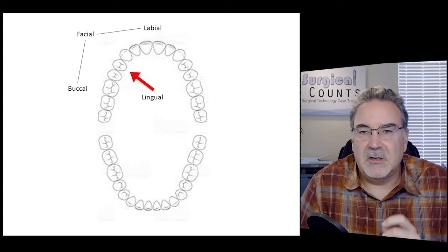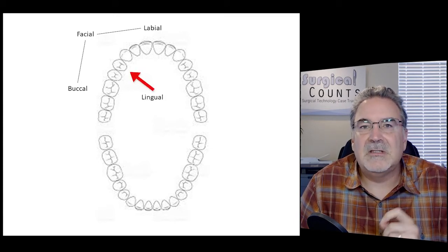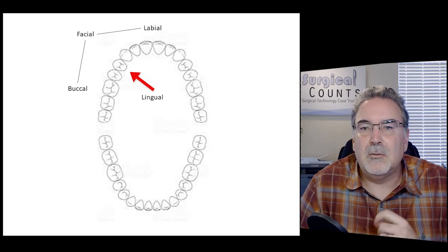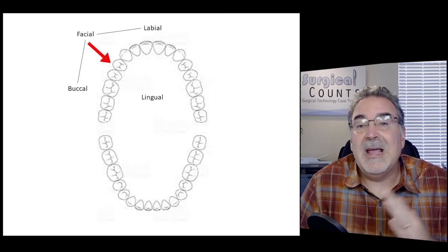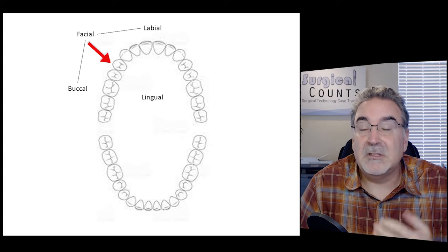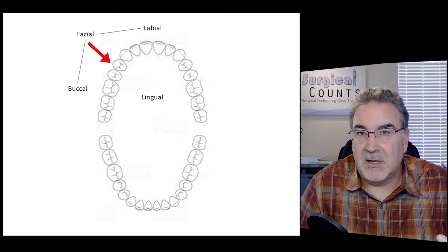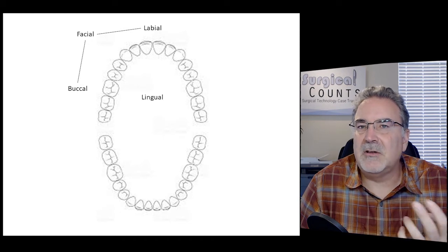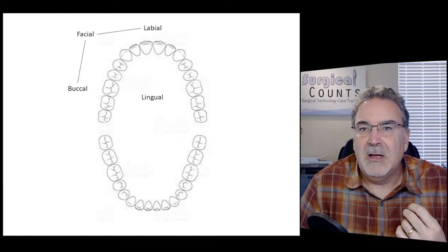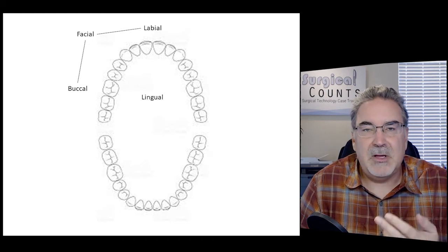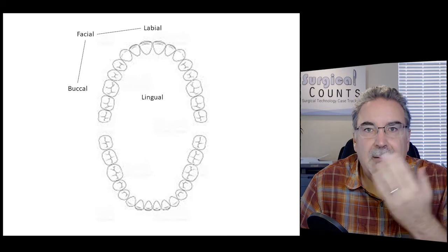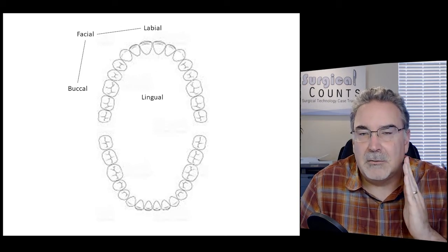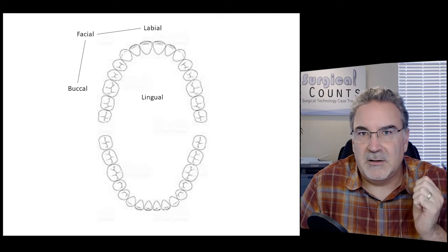The inside surface of the teeth is known as the lingual side, meaning the tongue side. The outside surface is known as the facial side, pointing out towards the face. The facial is actually divided into two sections: we have the labial side — labial meaning lips — versus further back, the buccal side, buccal meaning the cheeks.